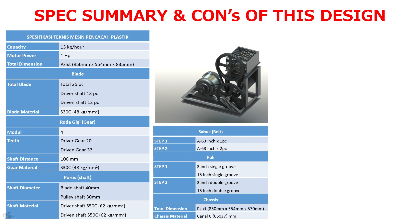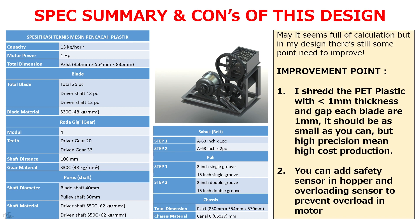I have some advice for you to improve in your own design. It may seem like a full calculation, but in my design there are still some points to improve. The first is I shred PET plastic with under 1 mm thickness, but the gap of each blade is 1 mm — it should be as small as possible, but high precision means high production cost. You can also add sensors and a hopper, plus an overload sensor to prevent motor overload.